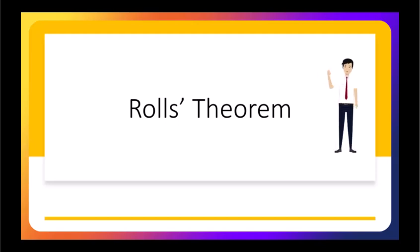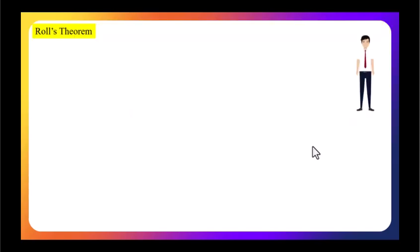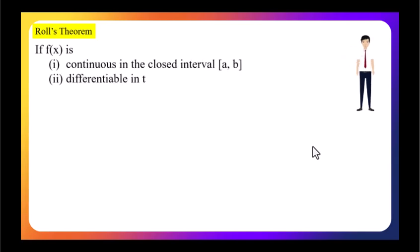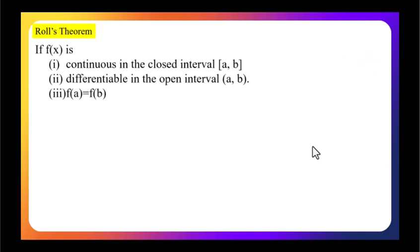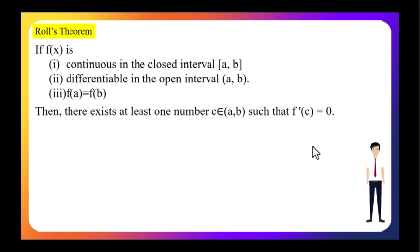Welcome to our interactive journey of calculus. In this video we will be exploring a theorem known as Rolle's theorem. The statement of Rolle's theorem is: if f(x) is continuous on the closed interval [a, b] and differentiable on the open interval (a, b), and if f(a) equals f(b), then there exists at least one point c in the interval (a, b) where f'(c) equals zero.